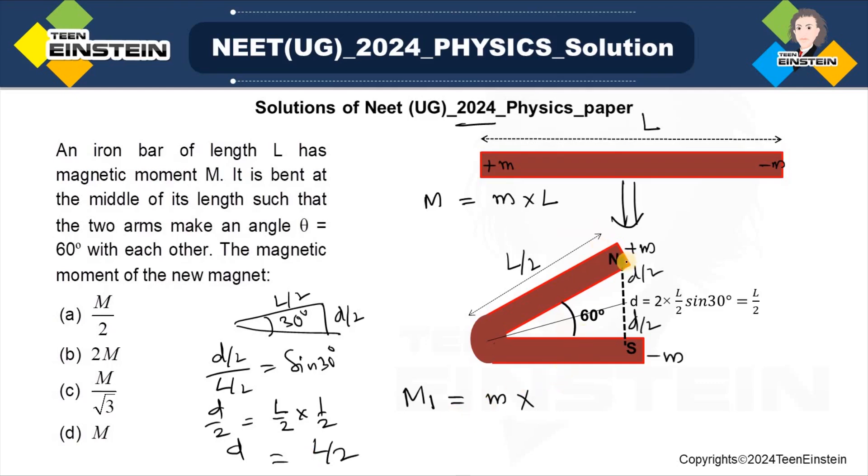So we have to find out the distance between these two pole strengths in the new magnet and that is found out to be L by 2. Now if I multiply L by 2 with this, then I get M L by 2, and M L is equal to capital M given, so we can write the new magnetic moment is M by 2, so option A will be the correct answer for this question. Thank you.